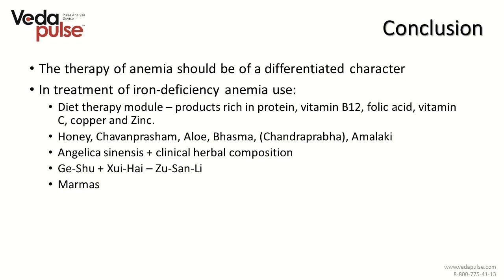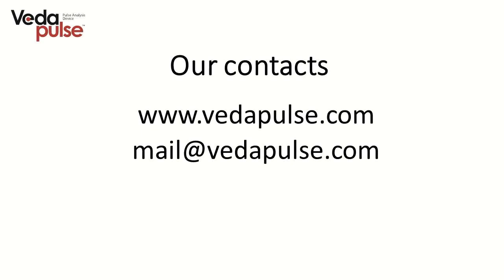Let's draw a conclusion. In order to provide effective treatment, the specialist should know how to identify different types of anemia and generate a proper diet using the diet therapy module. The key remedies are honey, Chyavanprash, aloe, Bhasma, Chandra Prabha and Amalaki. It is also necessary to use replacement therapy drugs containing iron and to influence corresponding reflexive points and marmas. Dear friends, thank you for your attention. Goodbye.